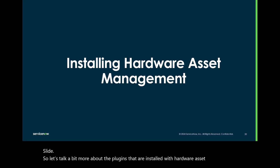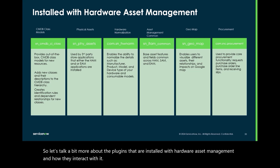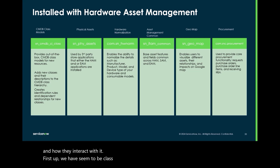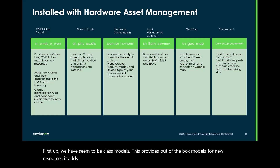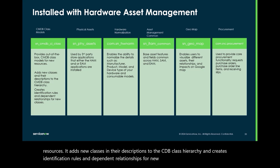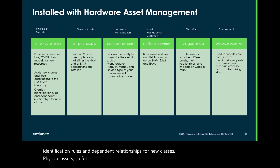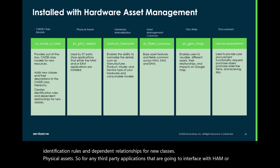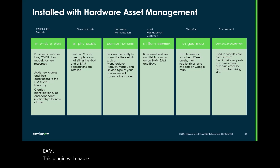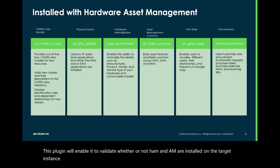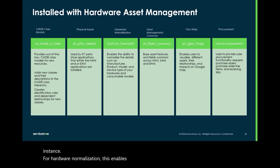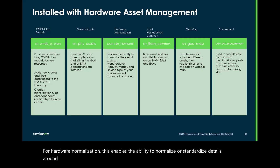First up we have CMDB class models — this provides out-of-the-box models for new resources. It adds new classes and their descriptions to the CMDB class hierarchy and creates identification rules and dependent relationships for new classes. For physical assets, this plugin enables any third-party applications interfacing with HAM or EAM to validate whether HAM and EAM are installed on the target instance. For hardware normalization, this enables the ability to normalize or standardize details around the manufacturer, product model, and device type for your hardware and consumer models.